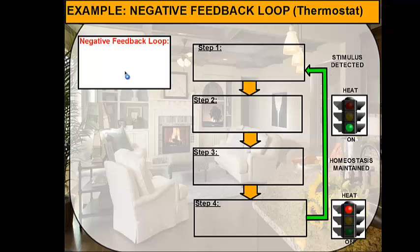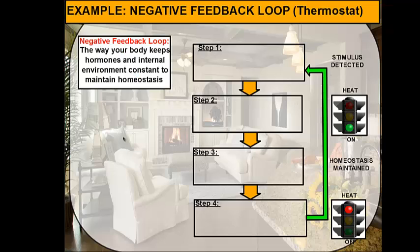The negative feedback loop is a mechanism that's been designed in our body to make sure that we keep things like hormones and other internal factors constant to maintain homeostasis in our bodies. For example, we don't want to have too much hormone in our blood or too little hormone in our blood. So the negative feedback loop makes sure that we have the right amount of hormone in our blood.